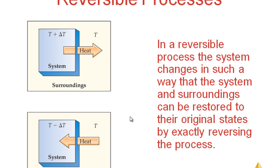In a reversible process — as the word suggests — just by doing the opposite, you can reverse the direction. By adding heat, the direction was heat transferring from system to surroundings. Just by removing the same amount of heat, you can reverse the direction so that heat flows from surroundings to system. These types of processes are called reversible processes: a process where the system and surroundings can be restored to their original states by exactly reversing the process. You add heat; the reverse is to remove heat. You can keep changing the direction of the process.